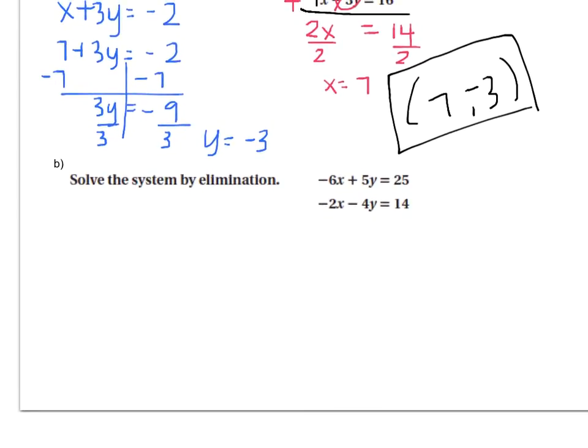Let's check out letter B. If I add, does anything cancel? No. If I subtract, does anything cancel? No. So I have to figure out a way to make something cancel. So watch this. If I multiply this whole bottom equation by three, then I'll get negative six x minus twelve y equals forty-two. Now if I line that up next to the other one, negative six x plus five y equals twenty-five, do you see how something will cancel now?